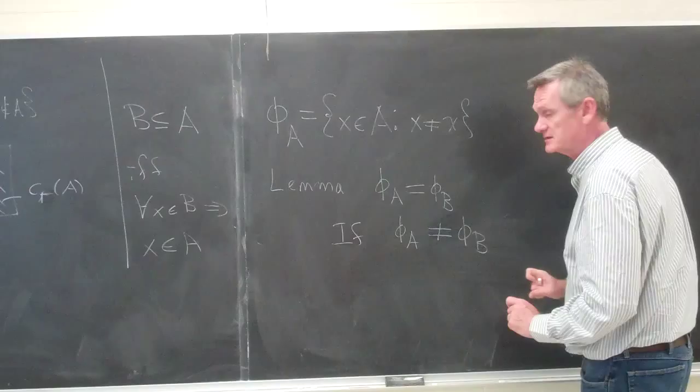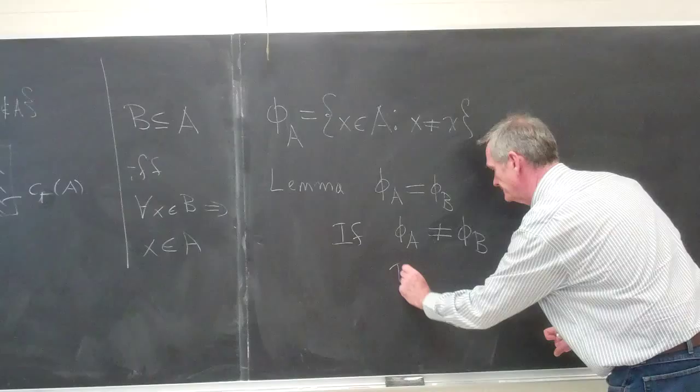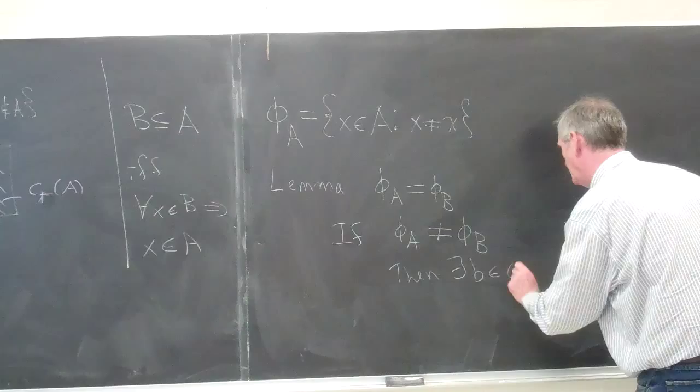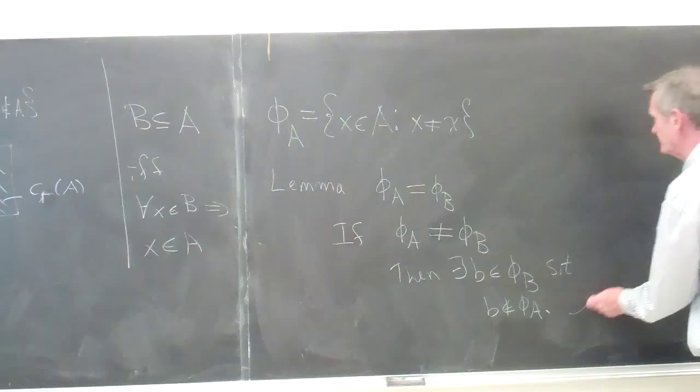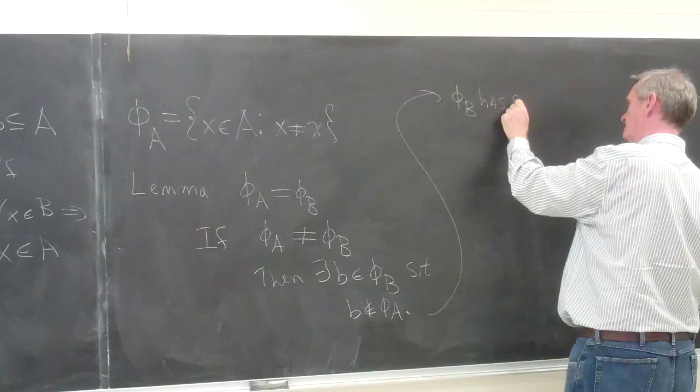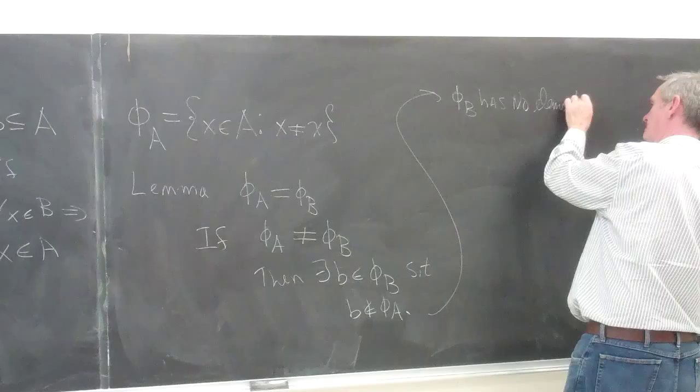So let's say that then there exists a B in the empty set of B such that B is not in the empty set of A. But the empty set of B has no elements. And so this is a contradiction.